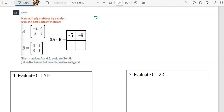So let's write that out. We have 3 and then our matrix A and then we have minus our matrix B.